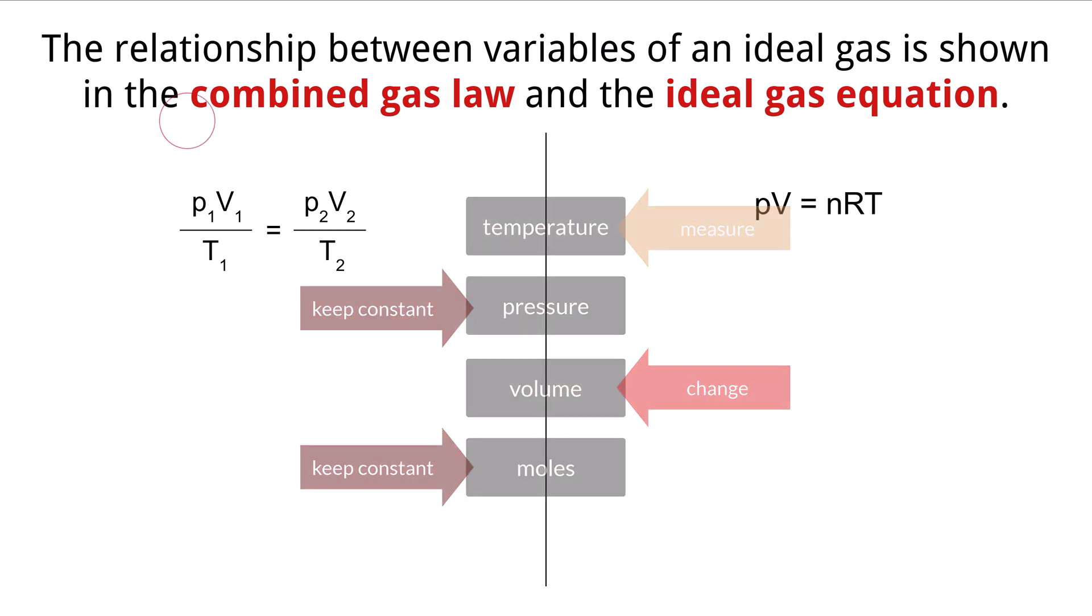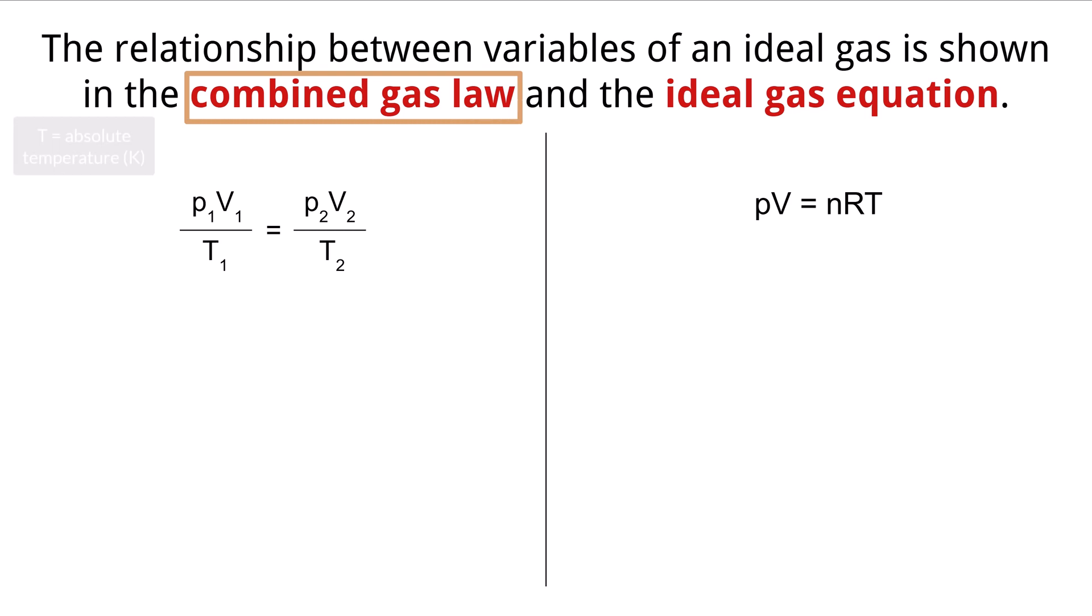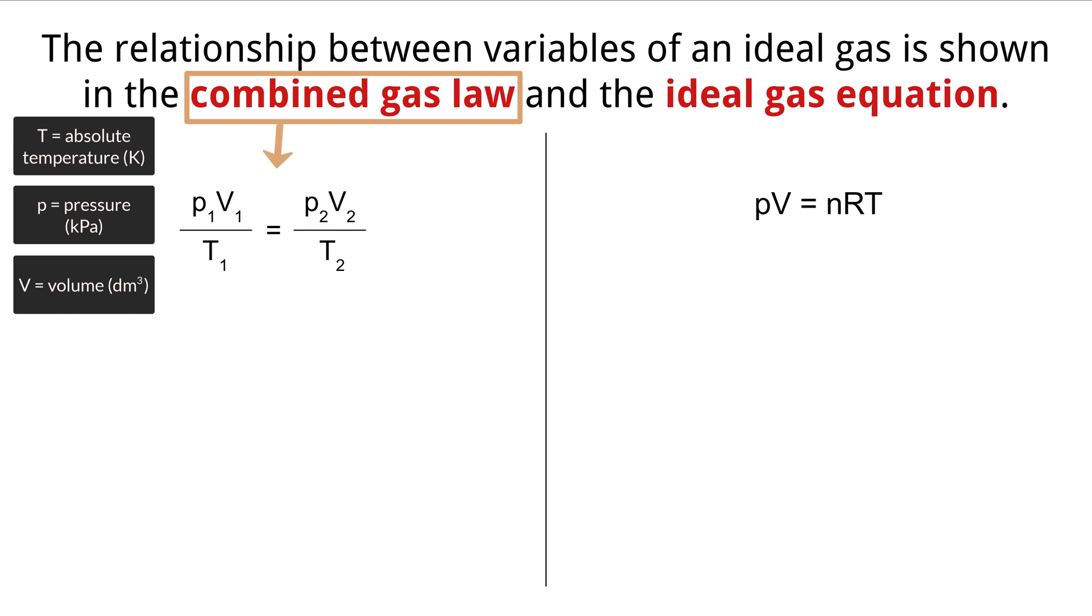The combined gas law shows the relationship between absolute temperature, pressure, and volume and is written as P1 times V1 divided by T1 is equal to P2 times V2 divided by T2. P is pressure, V is volume, and T is temperature. And the 1 represents the initial state of the gas and the 2 represents the final state of the gas. In terms of units, you should be using cubic decimeters for volume, Kelvin for temperature, which is an absolute scale starting at zero, and kPa for pressure.